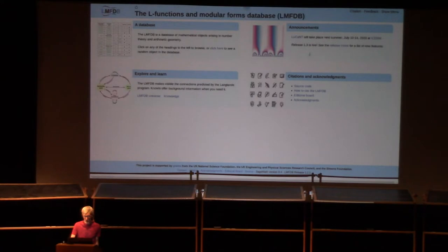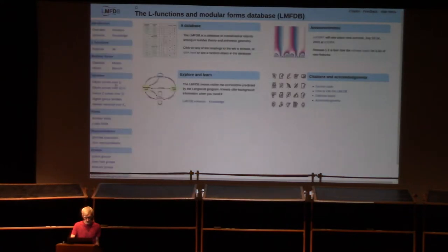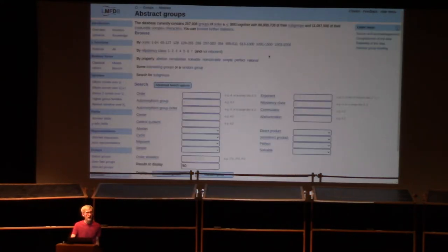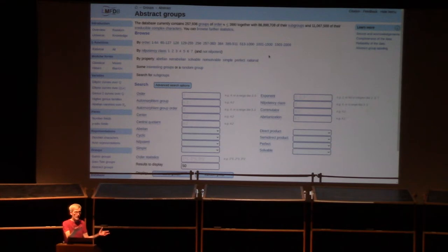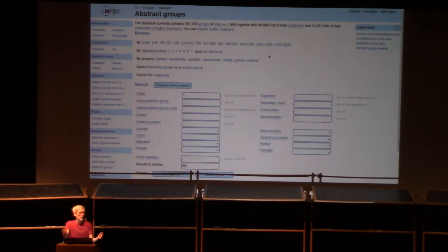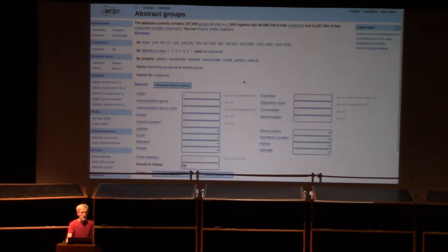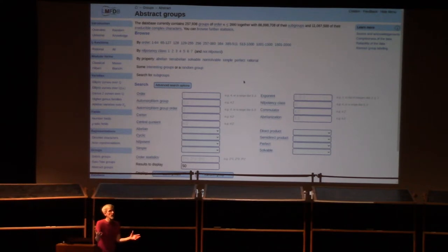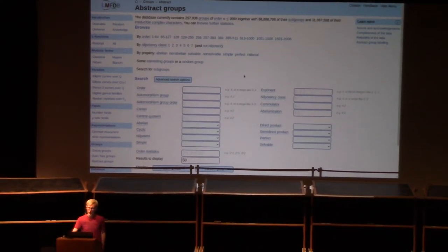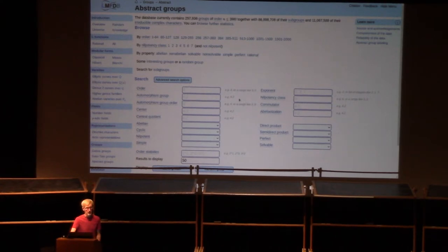You might wonder: what's the advantage of having all this information in the LMFDB? You can go into SAGE, GAP, MAGMA, or OSCAR — they all have access to the small groups database. If you know the label of your favorite small group, you can compute all sorts of things about it. But what the LMFDB allows you to do is search for groups based on their properties. You don't have to know the label ahead of time — you can describe what you're looking for.